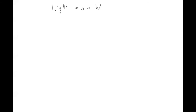Today we're going to talk about light as a wave. Previously we've been talking about light acting like a ray, and another way that you might think about that is light acting like a particle. When light is acting like a particle, we call that a photon.